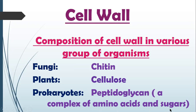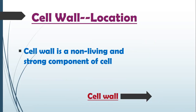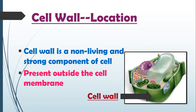We have discussed the chemical composition of the cell walls of all organisms. Now let's check the location of the cell wall. Cell wall is a non-living and strong component — it is hard, non-living, and strong. Its location is outside the cell membrane.